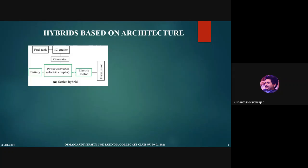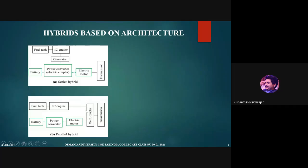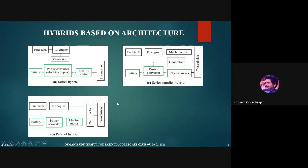Next, this is a parallel hybrid. At times when you want to use the IC engine you can, and at other times when you want to use the electric motor you can. The IC engine powered by petrol or diesel goes to a coupler, then the transmission. The battery powered by electricity goes to a power converter, which powers the electric motor, goes to a coupler, transmission, then the wheel. This provides more flexibility, but you have to be careful about the mechanical coupler.